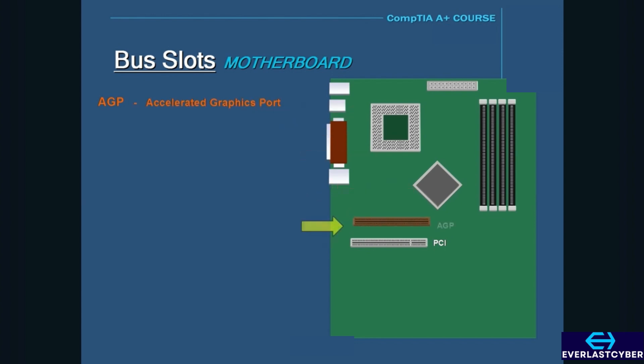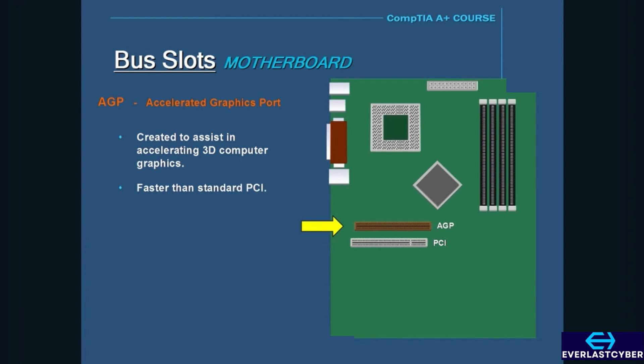AGP stands for Accelerated Graphics Port, and it was created to assist in accelerating 3D computer graphics. One of the main reasons why AGP is faster than PCI is that AGP has its dedicated pathway to the processor. Unlike PCI, the AGP port is only used for a video card and is usually brown.